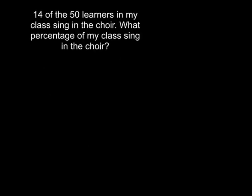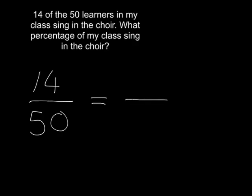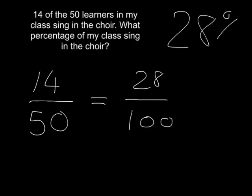It is often very useful to know what percentage we have. For example, if I know that 14 of the 50 learners in my class sing in the choir, it might be useful to know what percentage that is. This is quite easy — we say 14 out of 50, and we want it as a fraction over 100. We can see that 50 times 2 is 100, so 14 times 2 gives me 28 over 100, meaning it's 28% of my class.